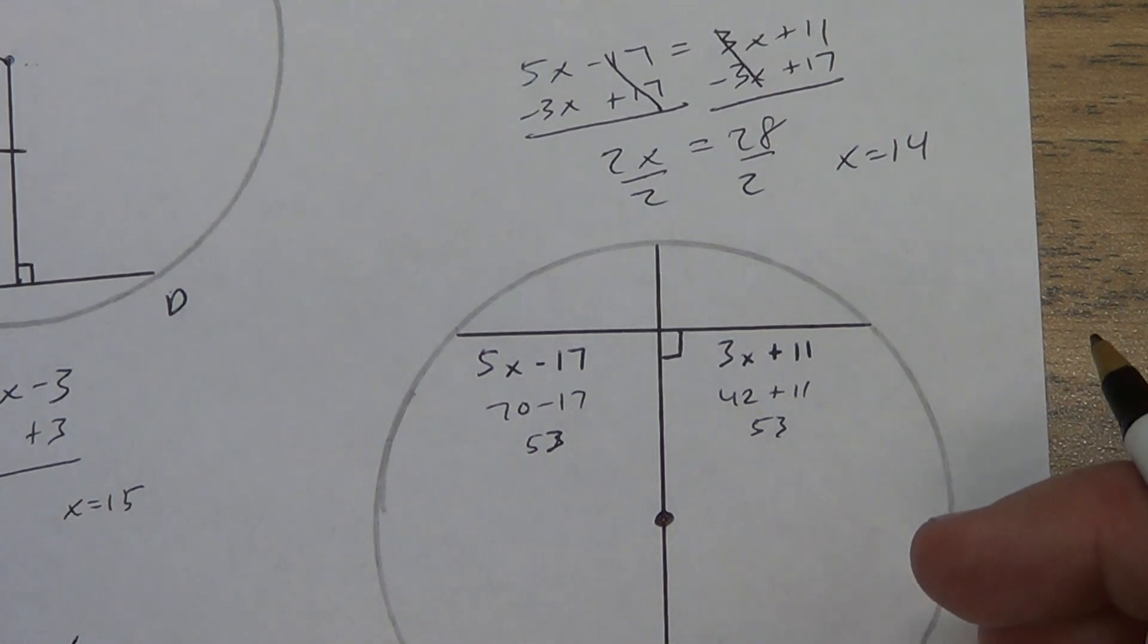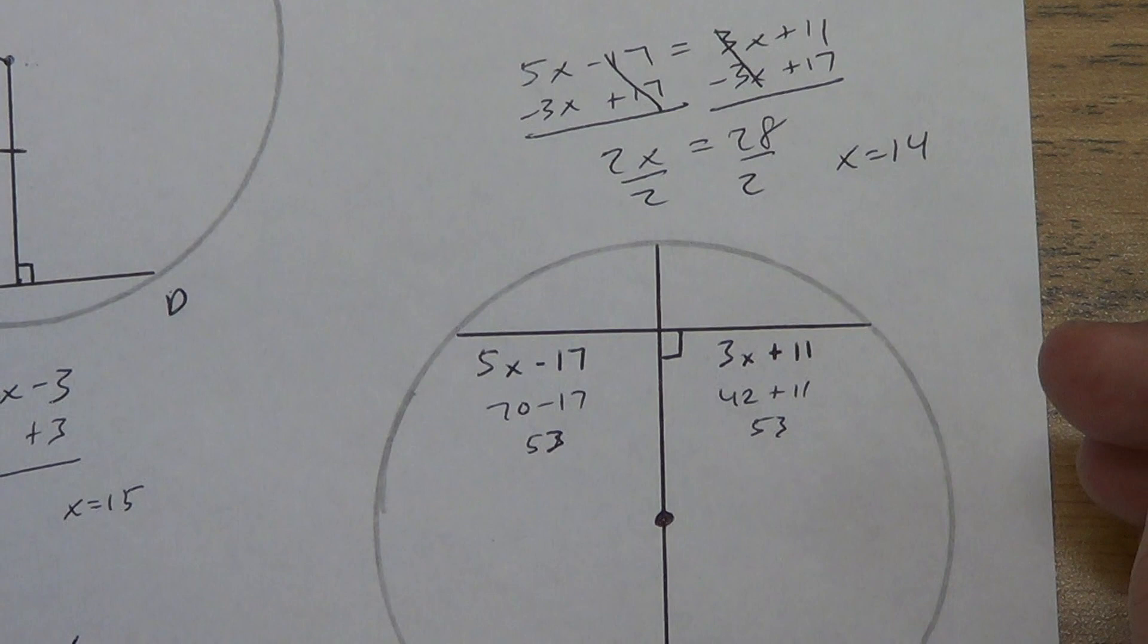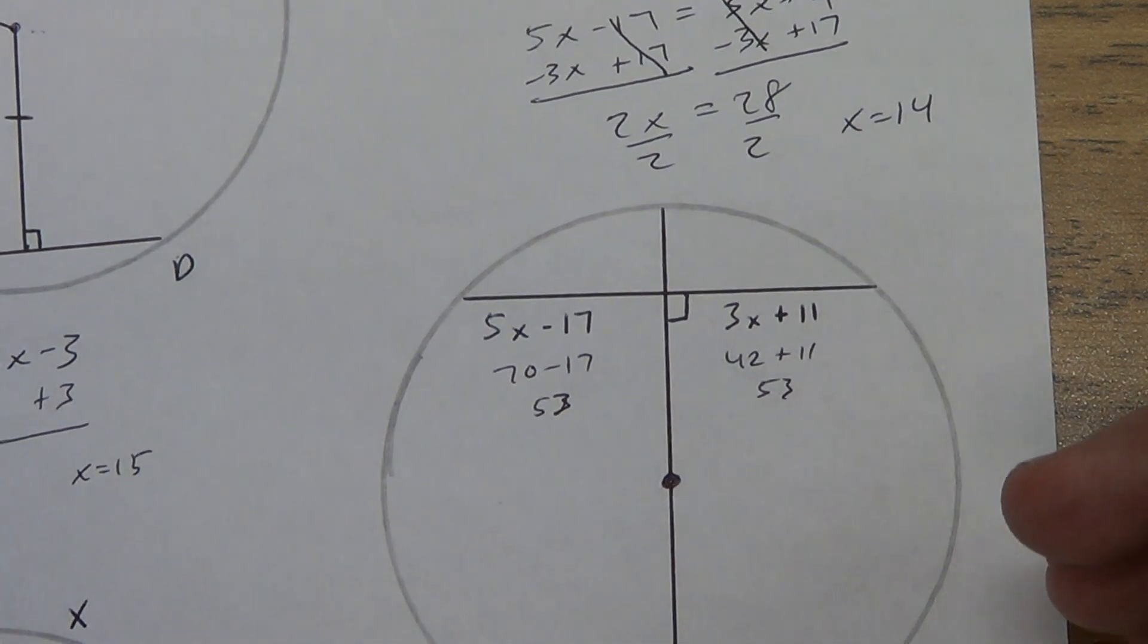It's okay if it's 53. It just means it's a really big circle, or it means they're using a really small measurement, like maybe 53 millimeters or something like that. But that's fine.